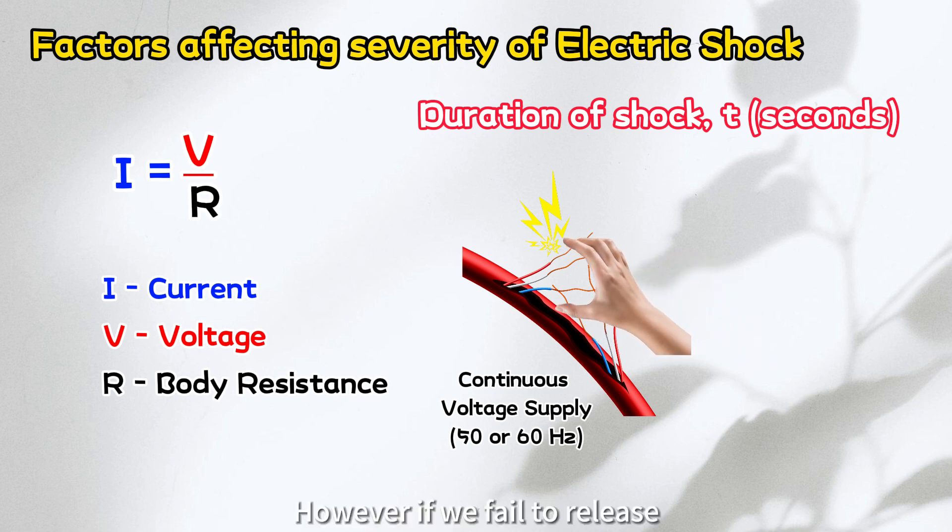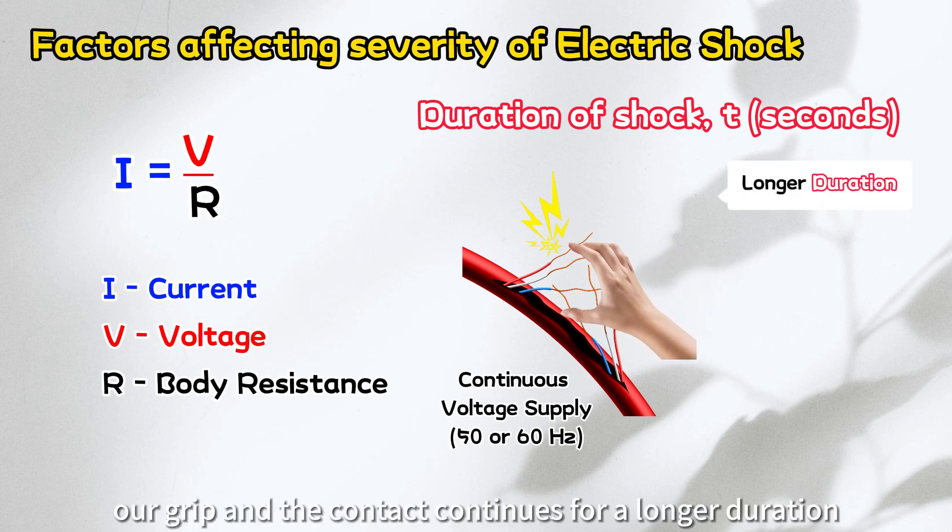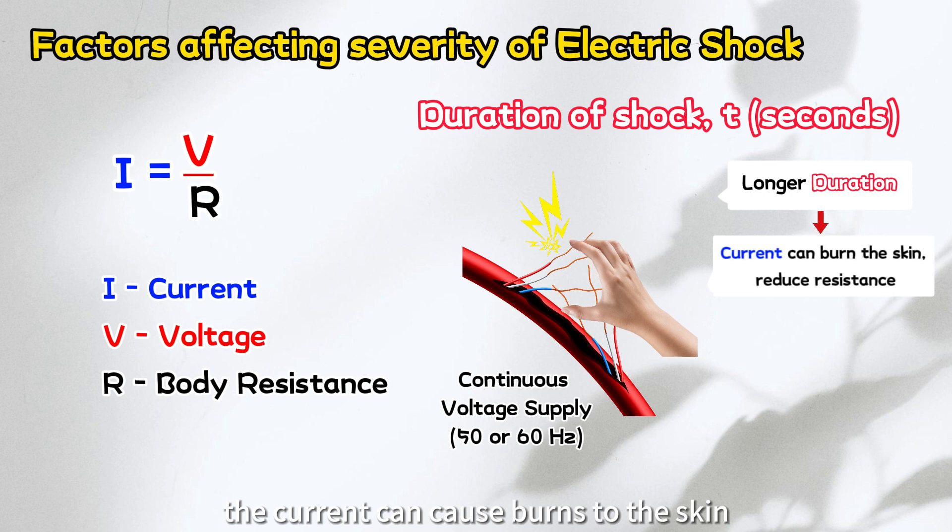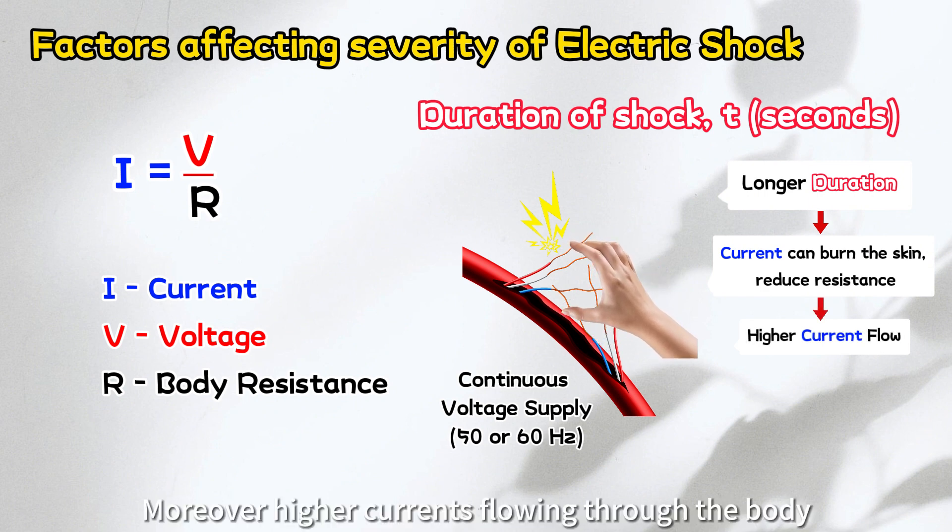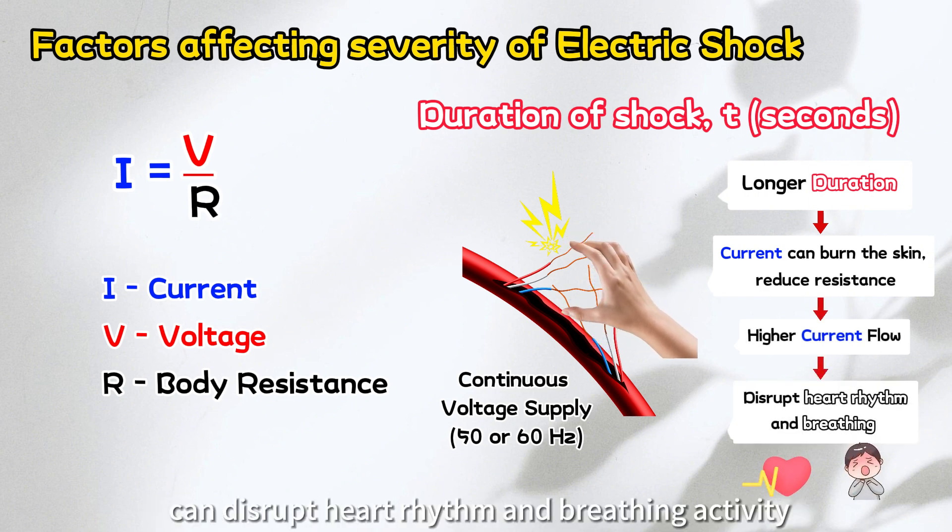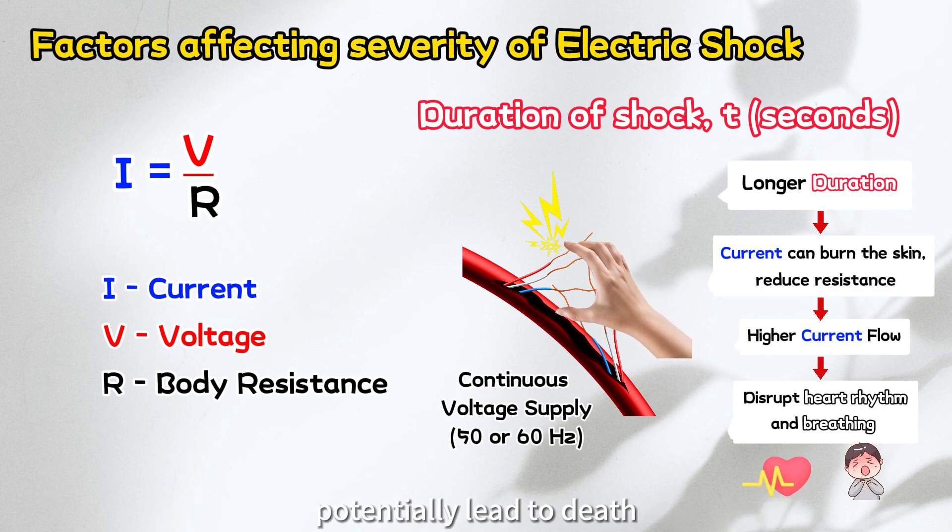If we fail to release our grip and the contact continues for a longer duration, the current can cause burns to the skin. This can create wounds that further reduce the resistance and lead to higher current flow. Moreover, higher currents flowing through the body can disrupt heart rhythm and breathing activity, potentially leading to death.